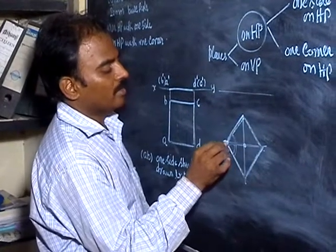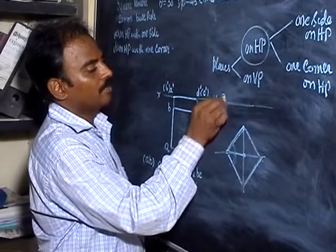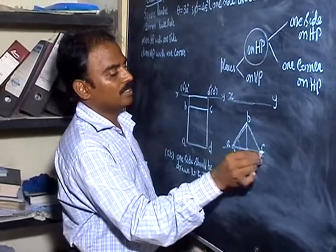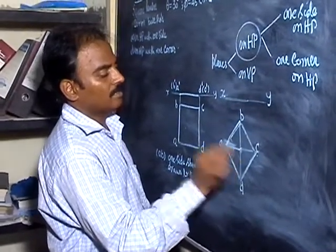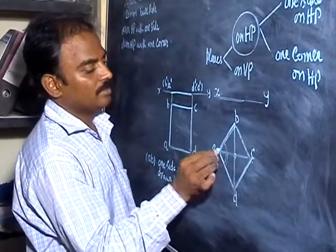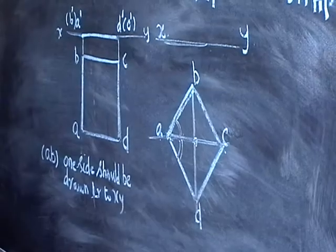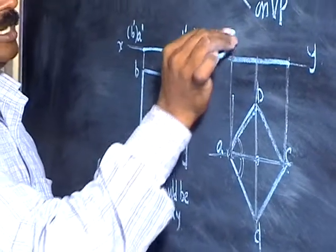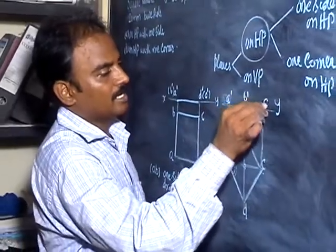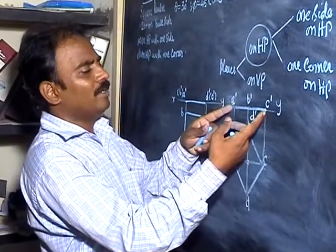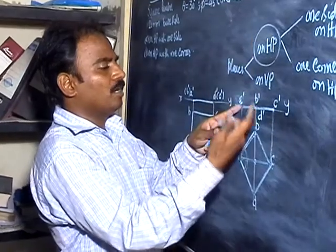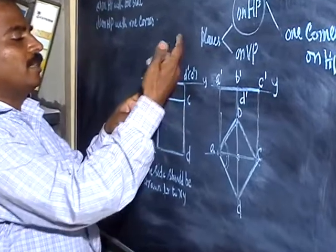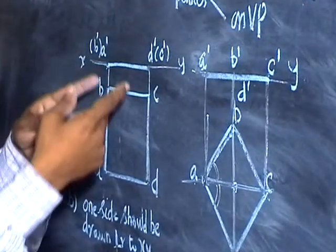For the corner position, the rule is: the line joining the corner and the centre of the plane should be kept parallel to the XY line. Label corners A, B, C, D. If this is the centre, then the line joining the centre and point A should be parallel to the XY line. If you project this, you get the respective front view with A′, B′, C′, D′. For a side position, you get two points on the XY line; for a corner position, the corner-to-centre line must be parallel to the XY line.